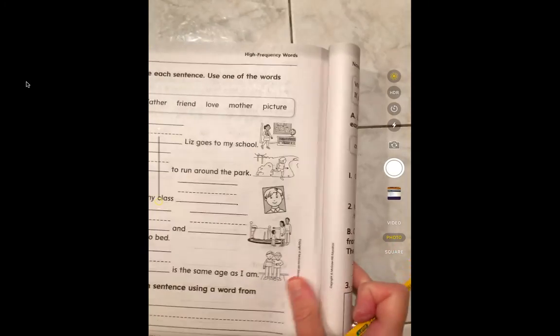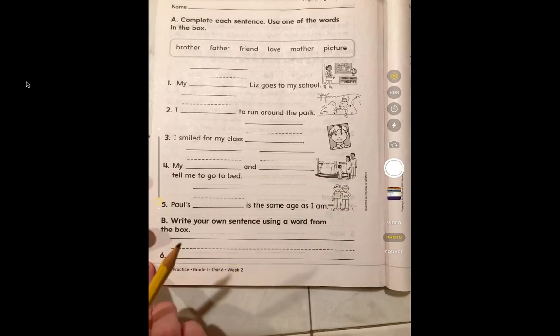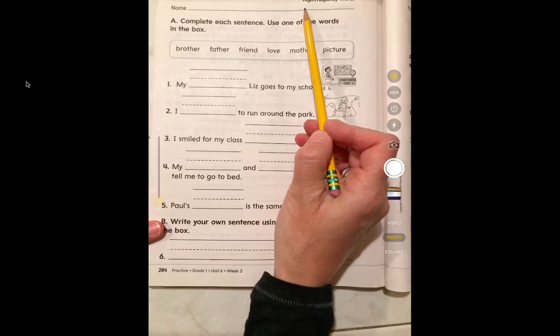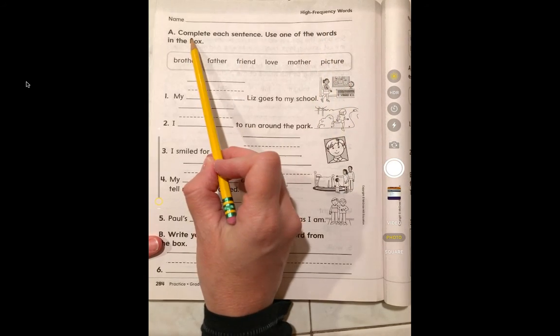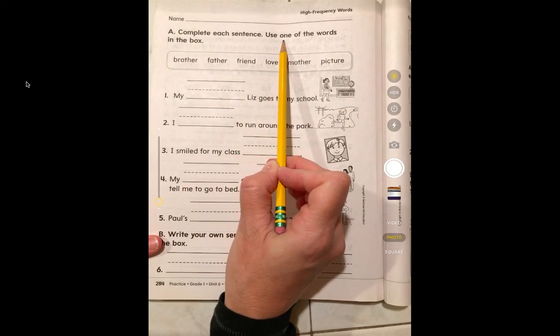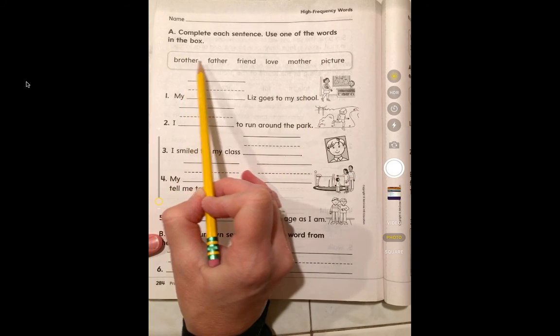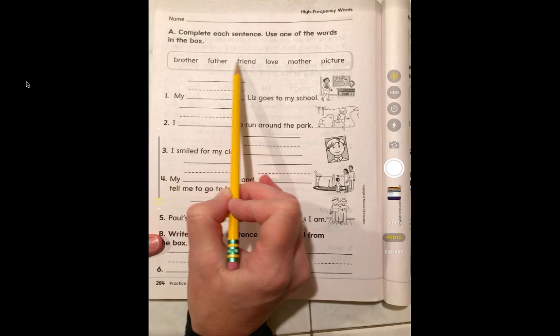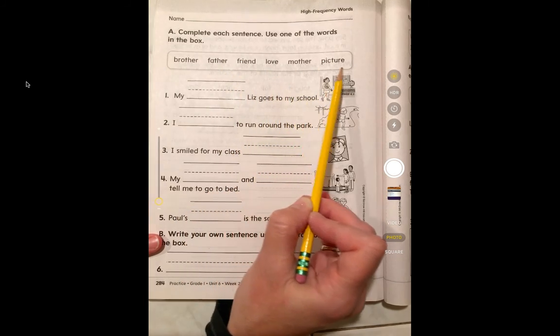The next page that you'll be doing is page 284. We'll be dealing with high frequency words. Complete each sentence. Use one of the words in the box. The words are brother, father, friend, love, mother, picture.